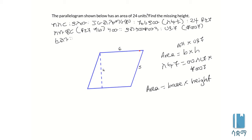Now let's look at the parallelogram shown here. The parallelogram — let's find the base times height. The base is six and the height, using the formula: area equals base times height.